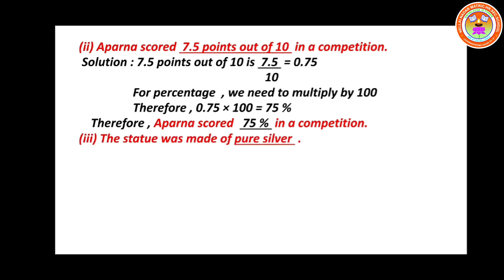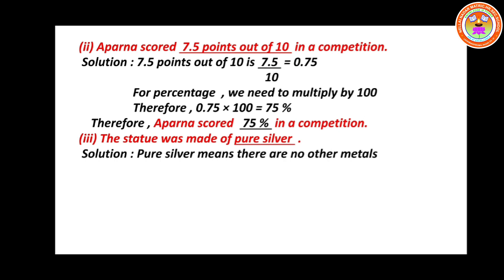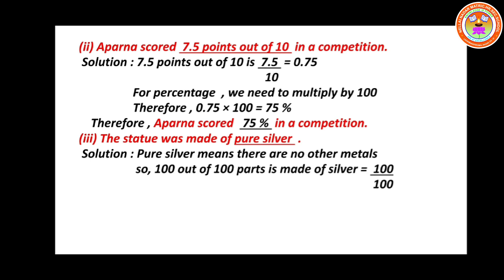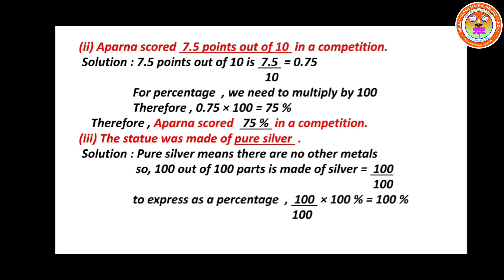Subdivision 3: The statue was made of pure silver. Pure silver means no other metals are combined. 100 out of 100 parts are made of silver, so 100 divided by 100 into 100% equals 100%. Therefore, the statue was made of 100% silver. Pure means 100%.